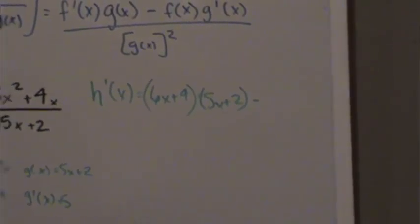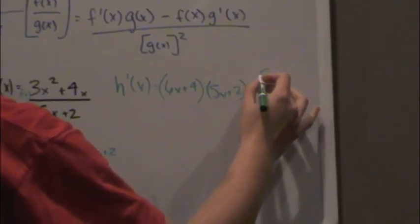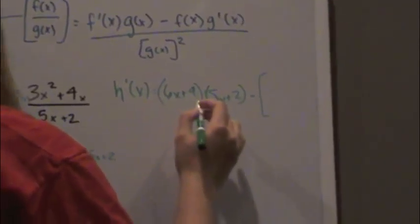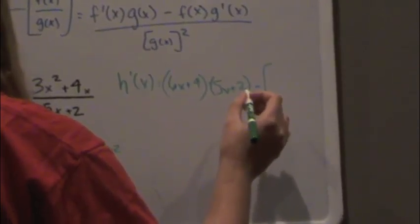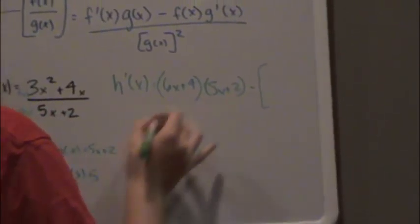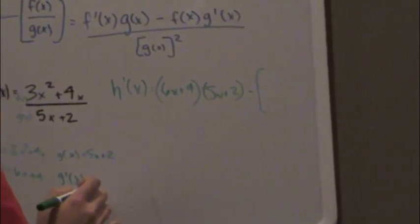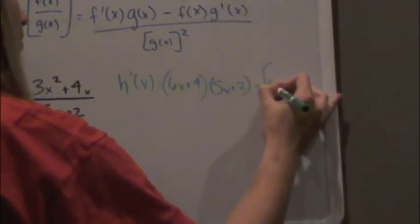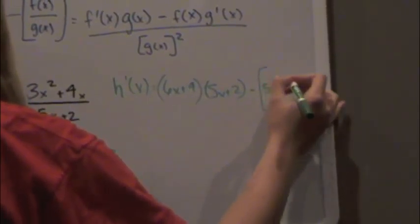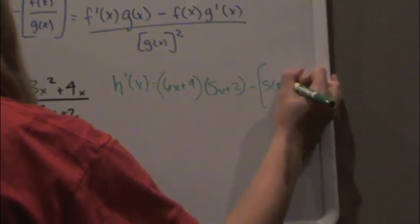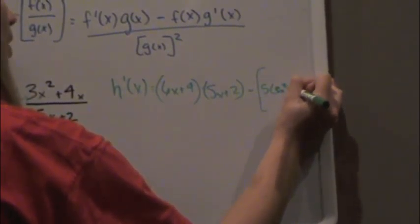Subtract f of x, so 3x squared plus 4x times the derivative of the denominator which is 5, so 5 times 3x squared plus 4x.